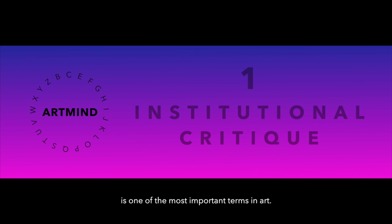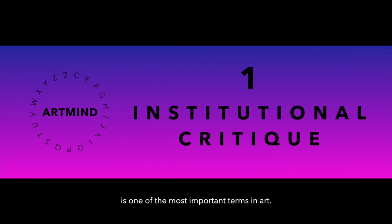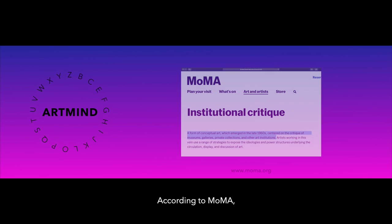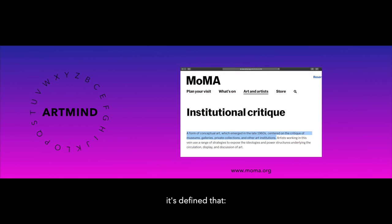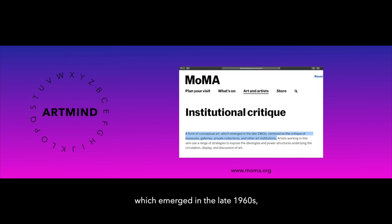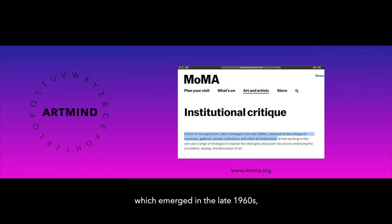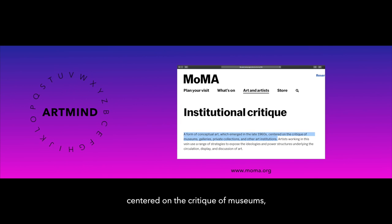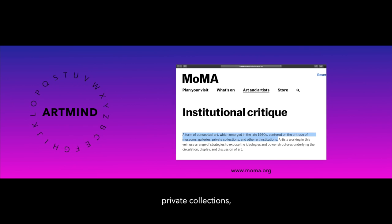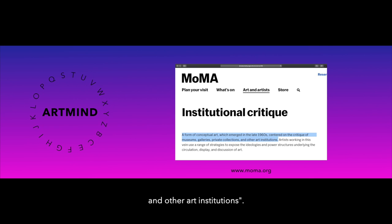Institutional Critique is one of the most important terms in art. According to MoMA, it's defined as a form of conceptual art which emerged in the late 1960s, centered on the critique of museums, galleries, private collections, and other art institutions.